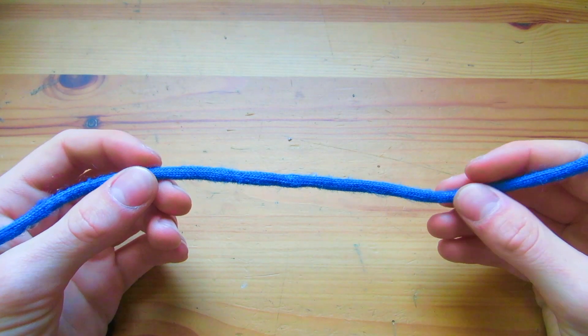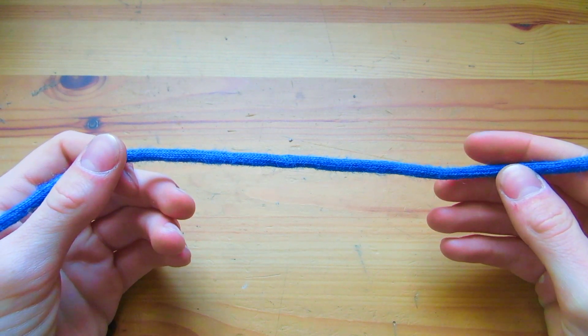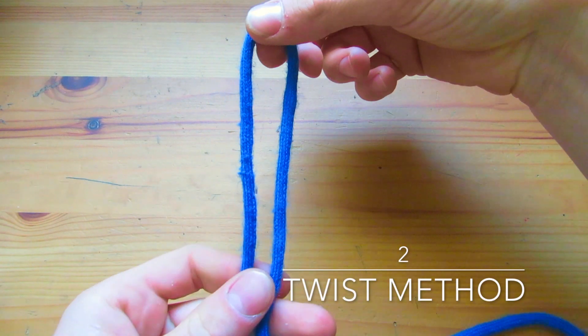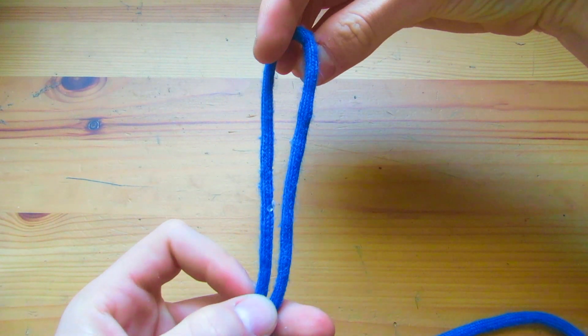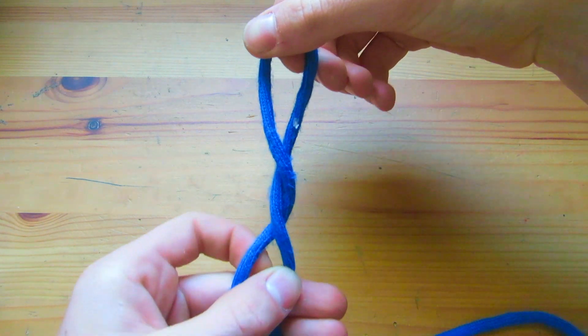The second method I'm going to show you is a little less practical, a little more tricky, but it can still tie the alpine butterfly. So I'm going to start with a bite. I'm going to twist it one time around. Like that.